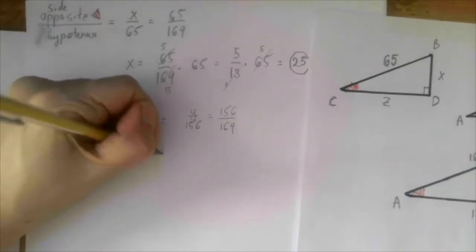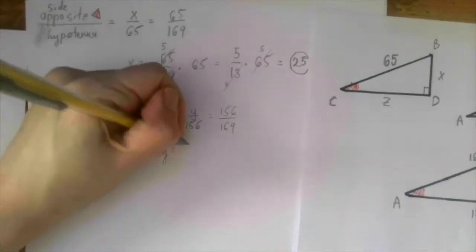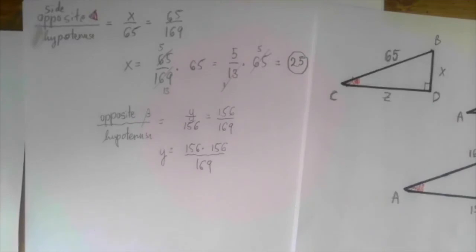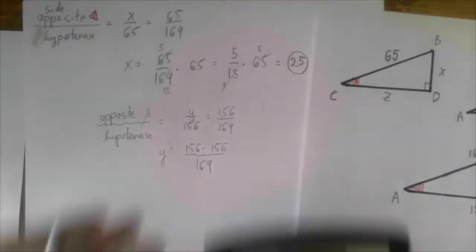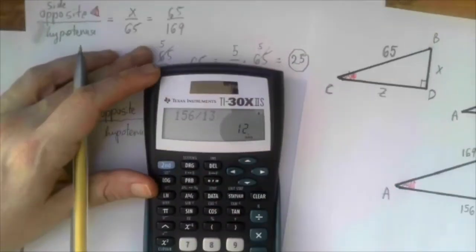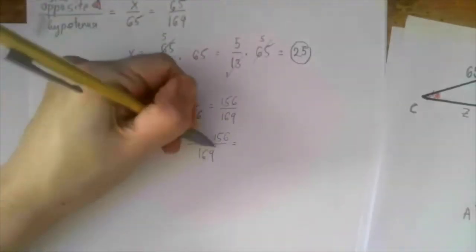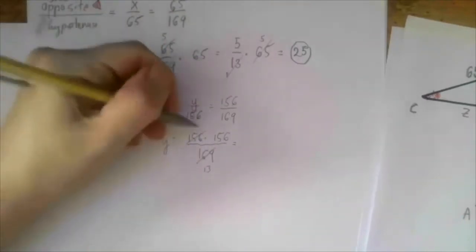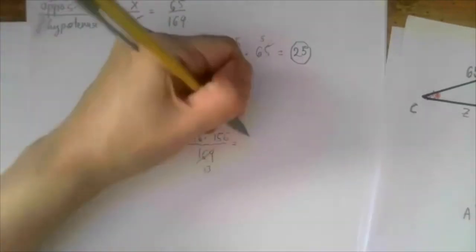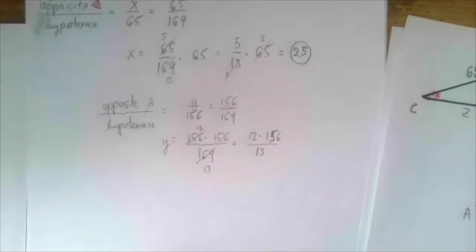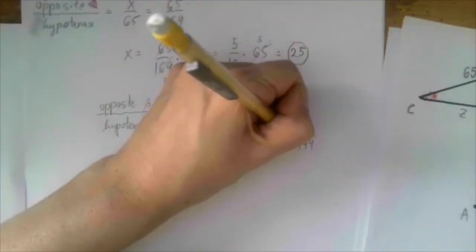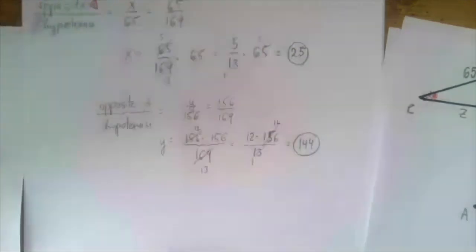We solve for y by multiplying both sides by 156. Since 156 is divisible by 13 — it's 12 times 13 — we can cancel a 13 from the denominator 169, and then cancel another 13 from the second factor 156. We get 12 times 12 over 1, which is 144. So y equals 144.